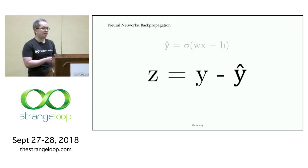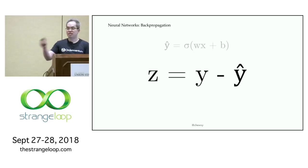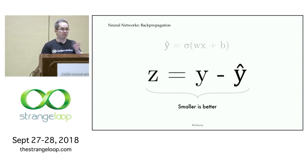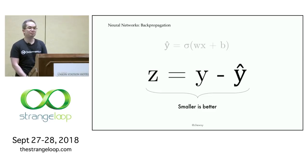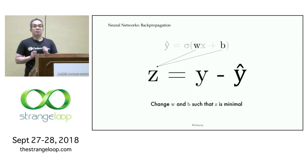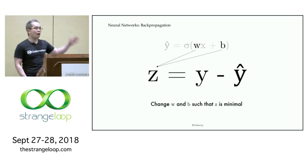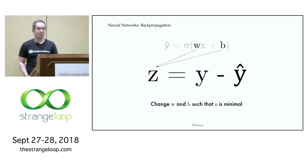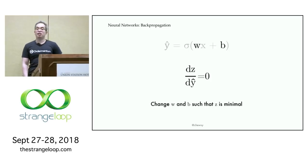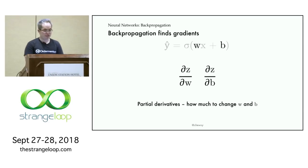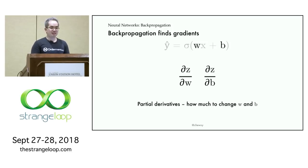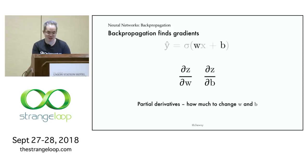We need to calculate the difference between the actual y and the predicted y. We call that z — the loss. The smaller your z is, the better your neural network is. Recall that the weights are changeable, so you simply change your weights and biases to make z as small as possible. Over the last 300 years we've learned how to do this — it's called differentiation. You differentiate your output with regards to your input, and the difference tells you how much to change your weights. When used in the context of neural networks, we call it backpropagation — but really it's just your basic high school chain rule.